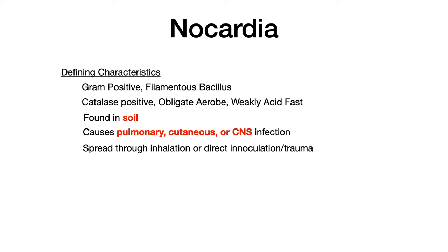They are found pretty ubiquitously in the soil, and for most people this is no problem. But in immunocompromised individuals, nocardia can be very problematic. Nocardia causes pulmonary nocardiosis, cutaneous nocardiosis, or disseminated nocardiosis — sometimes referred to as CNS nocardiosis, because once disseminated, symptoms usually show up as some type of neurological abnormality.